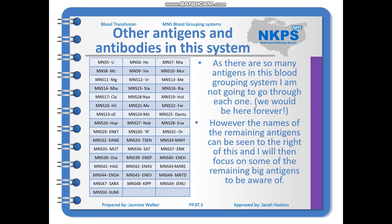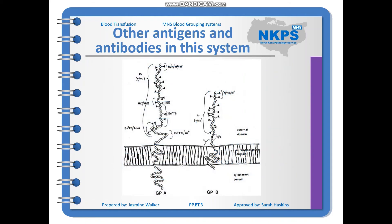We've covered the main antigens, but as mentioned there are 50 antigens in this system — they're listed in a table here. I also have a visual description of GPA and GPB showing where each antigen receptor sits on these molecules. At the top of GPA you have M and N; on GPB you can see S and little s lower down, with U very close to the membrane, and a second N in quotation marks at the top of GPB. Those are the two we'll now cover in more detail.